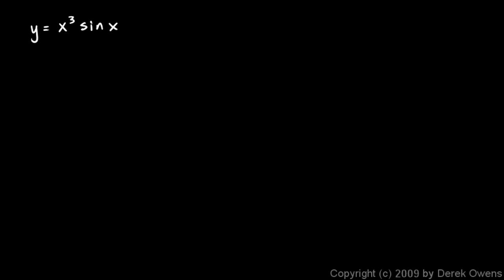Now we'll look at some examples of finding derivatives using the product rule. This first one is y equals x cubed times the sine of x. This is clearly two functions — x cubed is the first and sine of x is the second. The product rule says the derivative will be the first times the derivative of the second, plus the second times the derivative of the first.